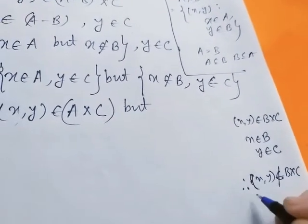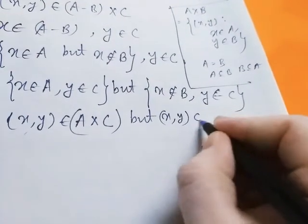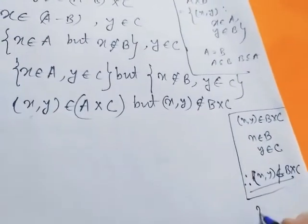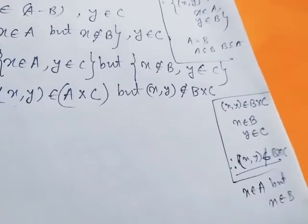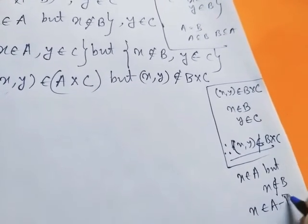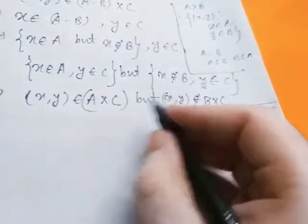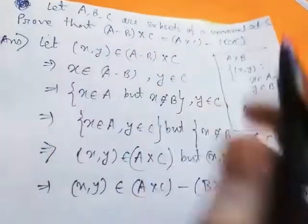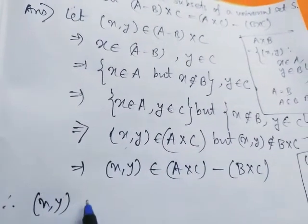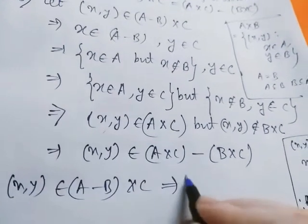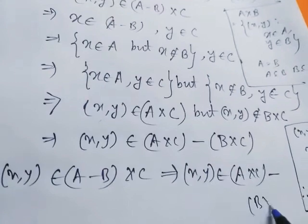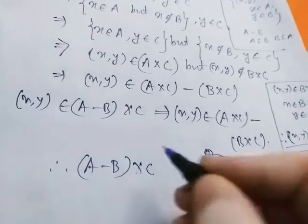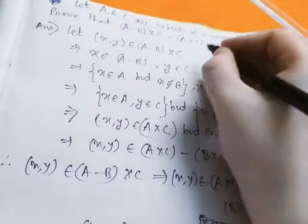Therefore ordered pair (x, y) does not belong to B cross C. Since x belongs to A but x does not belong to B, we have x belongs to A minus B. So ordered pair (x, y) belongs to (A cross C) minus (B cross C). Therefore, ordered pair (x, y) belongs to (A minus B) cross C implies ordered pair (x, y) belongs to (A cross C) minus (B cross C).